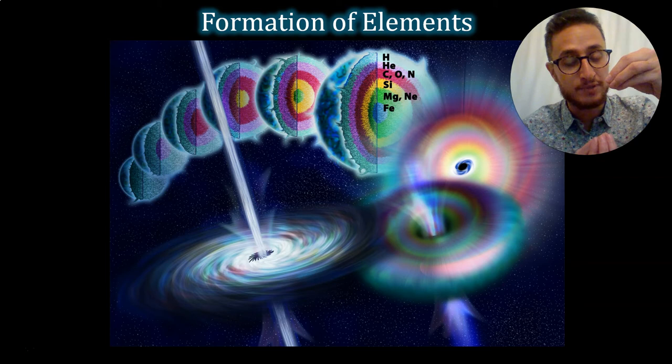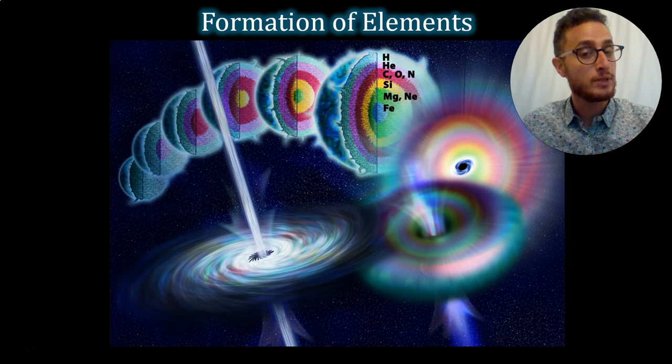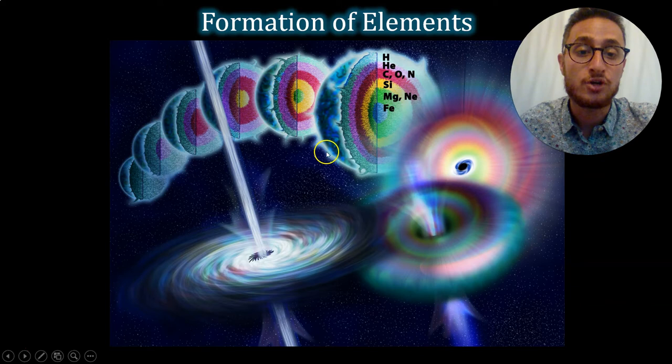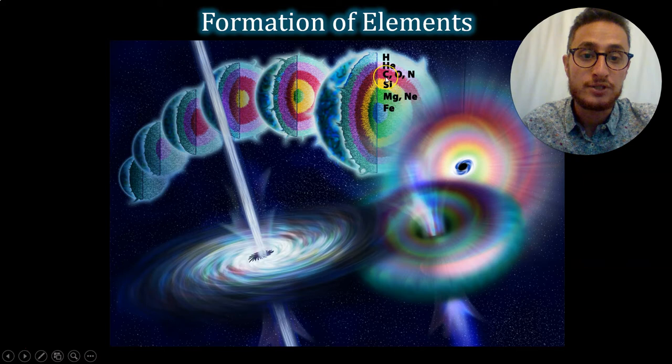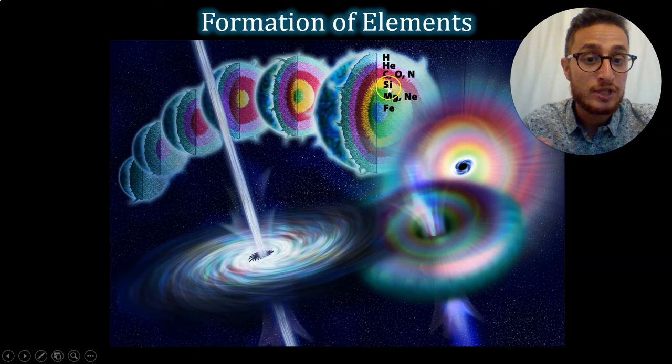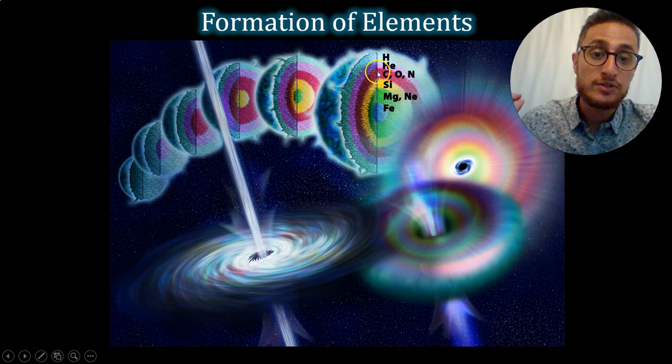The simplest element in the universe is hydrogen with just one single proton in the nucleus. When we fuse them together, we can form helium. But why stop there? If the mass of a star is big enough, you can fuse helium with other elements as well. And we can start to form bigger and bigger elements as we go. And so here you can see the formation of carbon and oxygen and nitrogen in this layer. And another layer deeper, silicon and magnesium and neon and iron.